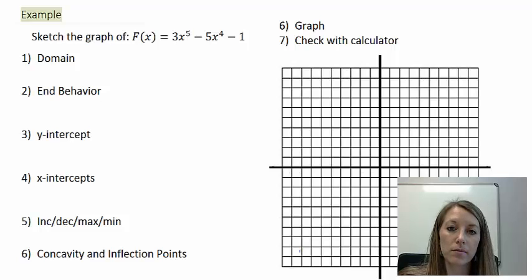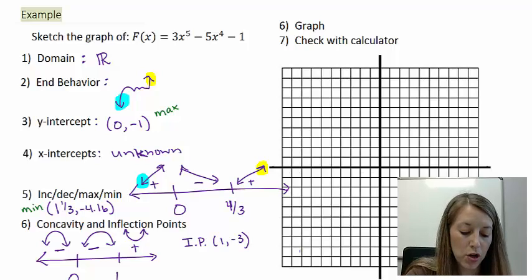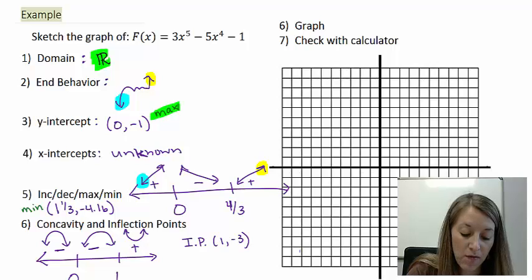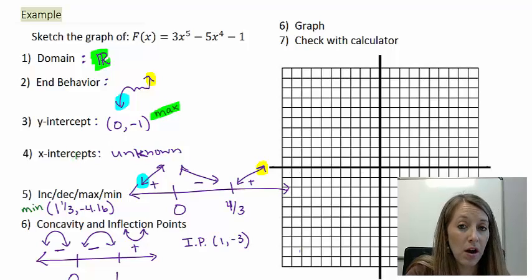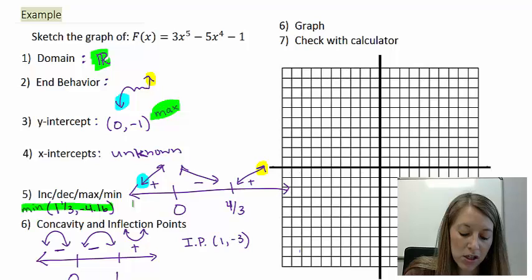Okay, so I have transferred all of the information over. So we know our domain is all real numbers, we know what the end behavior of the graph looks like, we know our y-intercept, we also found that that y-intercept was a maximum value, we couldn't figure out an x-intercept so that one was unknown. With increasing, decreasing, max and min, I transferred the graph over, and our maximum value and our minimum value with the inflection points, I transferred my sign chart over also.